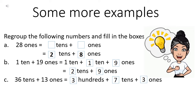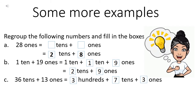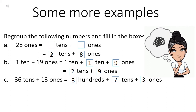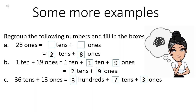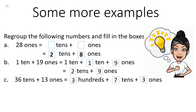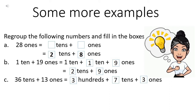Next example is one ten plus nineteen ones. One ten is already given and out of nineteen ones, you will get one ten and nine ones. So you already had one ten and from nineteen ones you get one ten more — one ten plus one ten become two tens, plus you have nine ones. Now suppose you have thirty-six tens plus thirteen ones. Thirty-six tens means three hundreds and six tens. Tens ko jab regroup karna hota hai, toh you regroup them into hundreds and tens. And in thirteen ones you have one ten and three ones. So three hundreds and six plus one, seven tens you get and three ones.